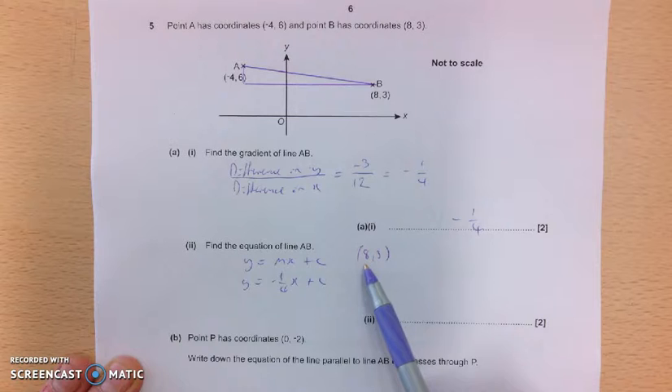So I'm going to take this x value and this y value, and I'm going to put them into this equation. So y, which was 3, equals minus 1 quarter times the 8, which was the x, plus this c that we don't know. OK, so minus 1 quarter times 8 is minus 2. OK, so then just add 2 to each side of this equation, and we get that 5 is equal to c.